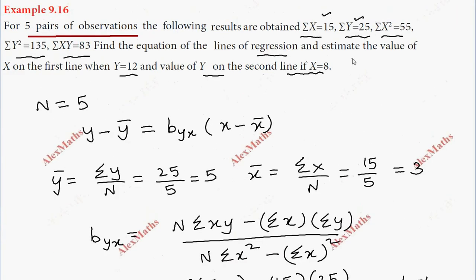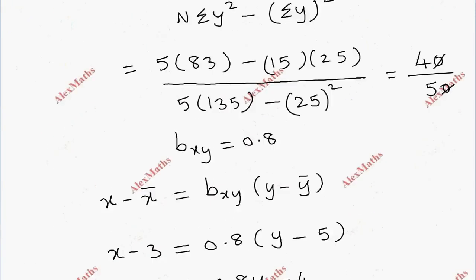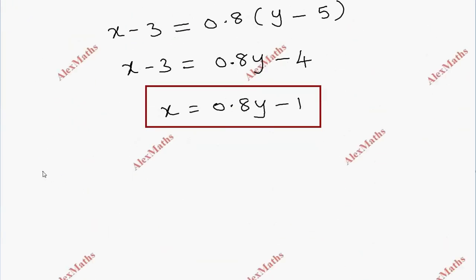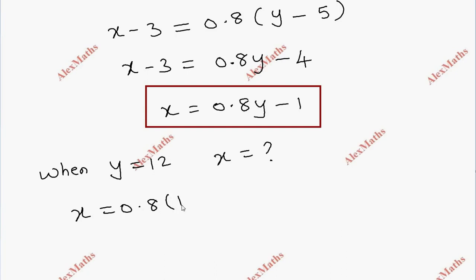Now we estimate the values. First, when y equals 12, find x. Using the line x on y: x equals 0.8 into 12 minus 1, which gives 9.6 minus 1, so x equals 8.6.